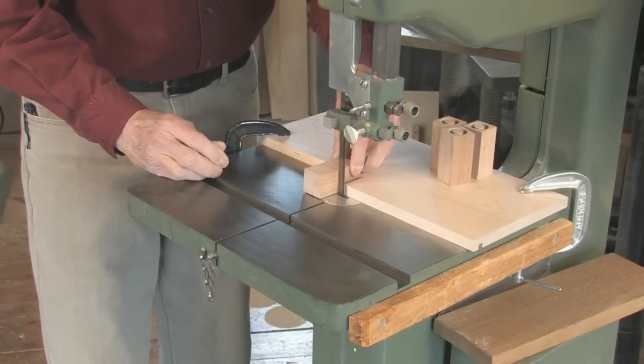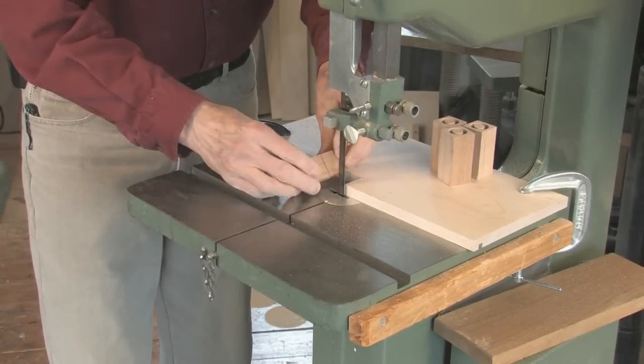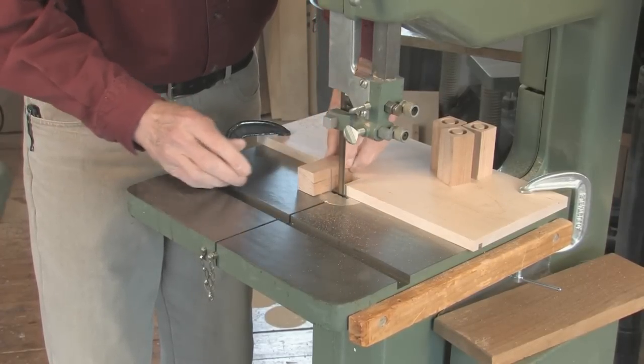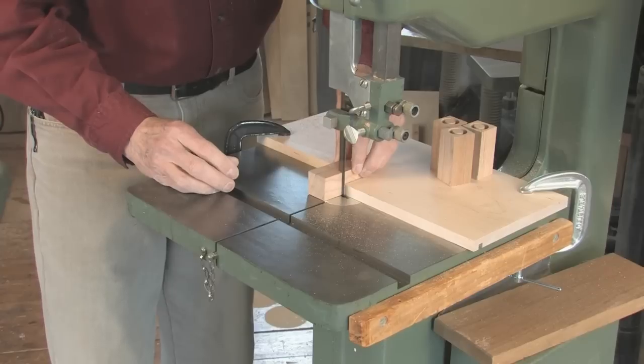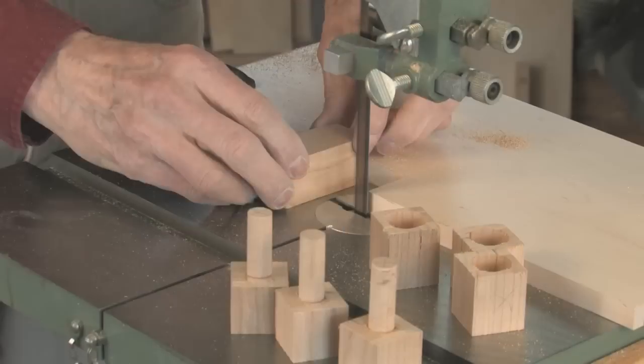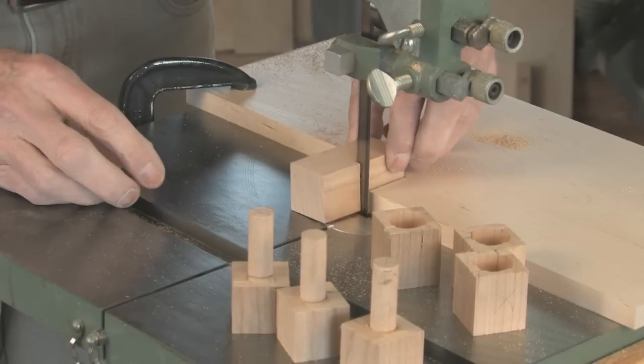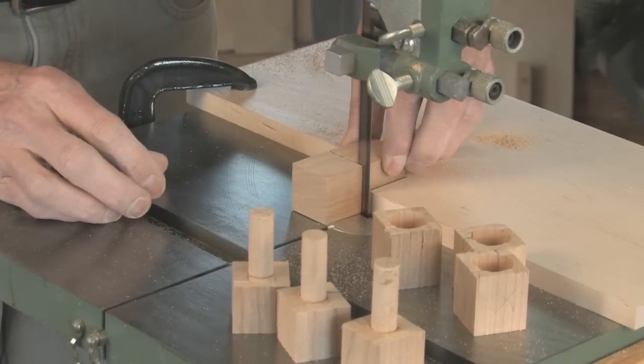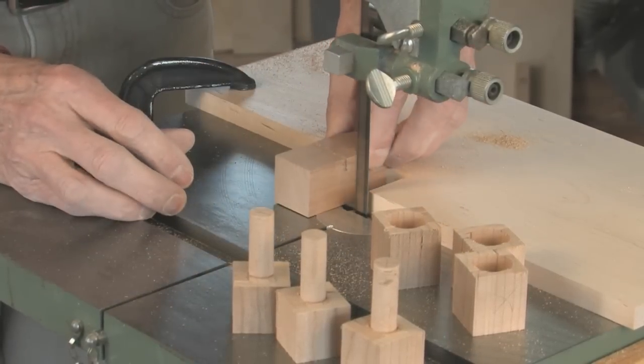Once that's done, I wander over to the bandsaw and again I make myself a little jig, clamp the jig in place and then make four cuts all the way around and that sleeve will just drop off. And you've basically done the hardest part which is getting all of your tenons the same diameter.